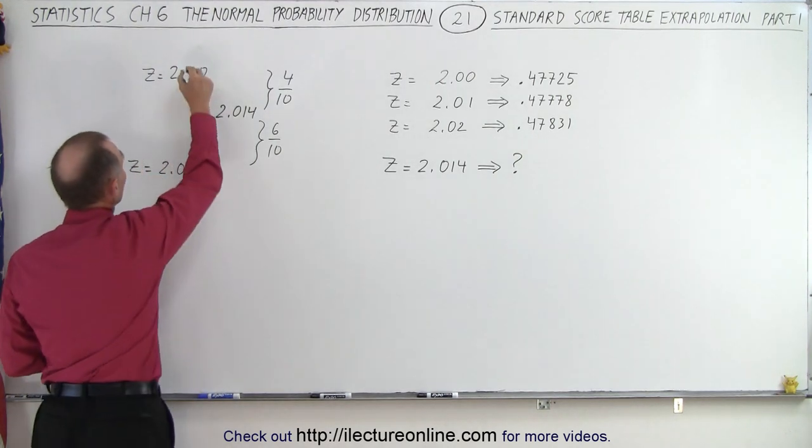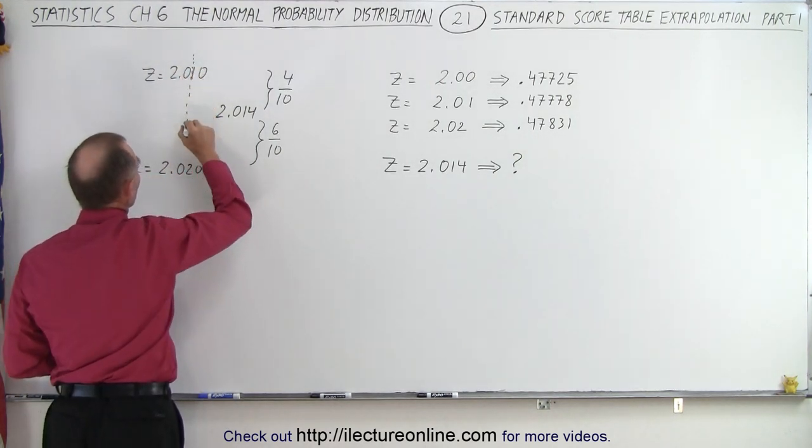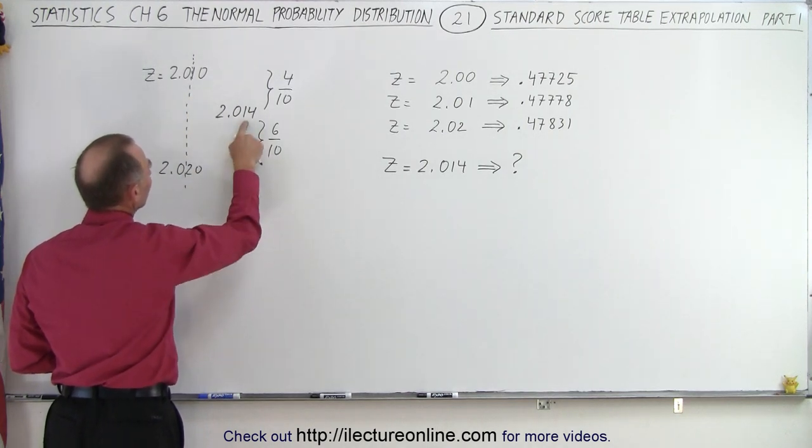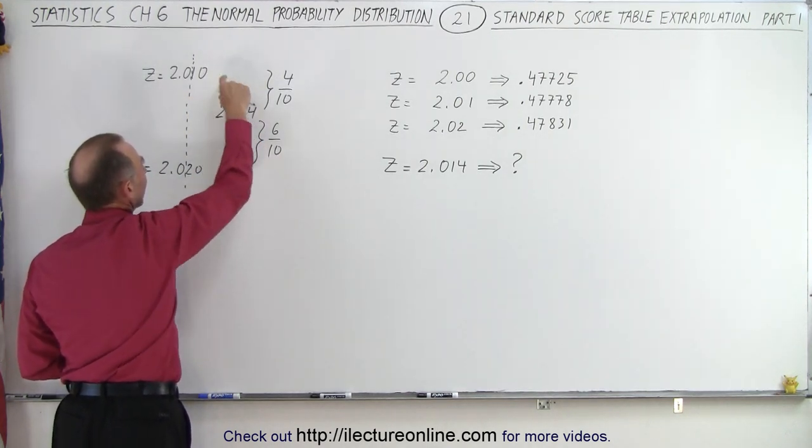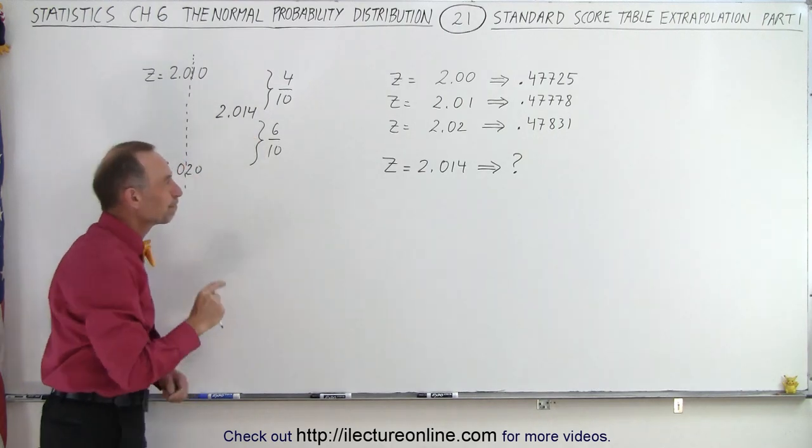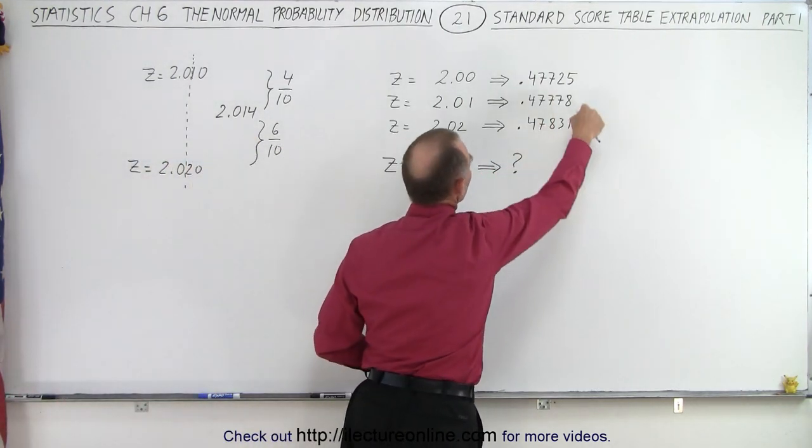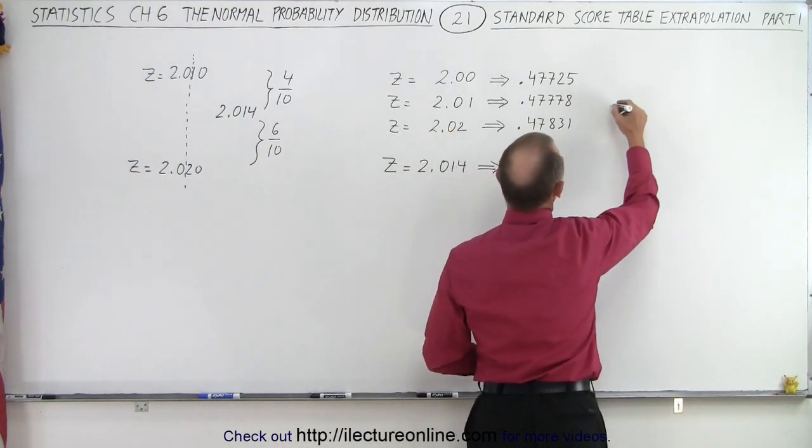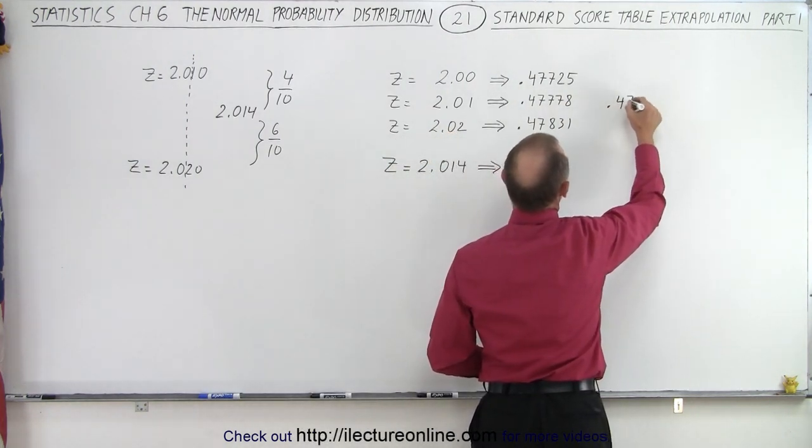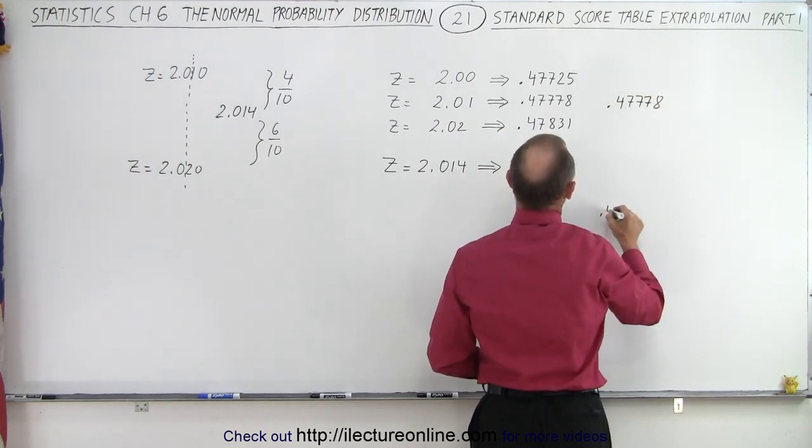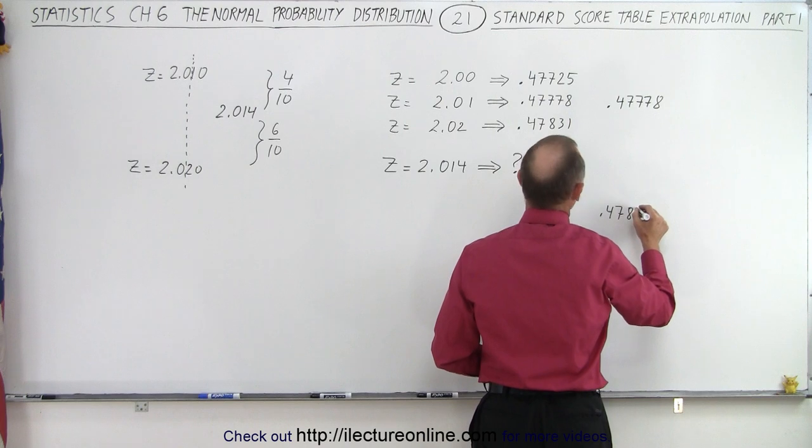You can see that by simply looking at the last two decimal places. Notice from 10 to 20, 14 falls 4 from 10 and 6 from 20. So we want to do the same thing with these two values right here. So in other words, we can say that this is 0.47778 and then this here is 0.47831.